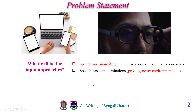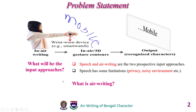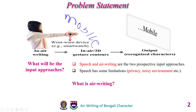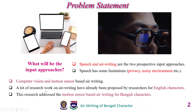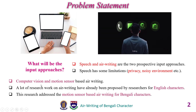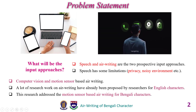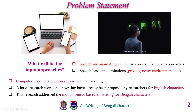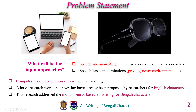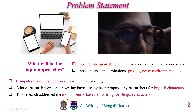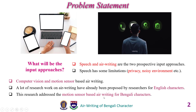Now, what is air writing? In air writing, the hand movement in three-dimensional space will be converted into linguistic characters, and by this way the user can give text input or any other instructions to the digital world. There are two methods of air writing: computer vision-based and motion sensor-based. A lot of research works on air writing have already been proposed by researchers for English characters. This research addresses the motion sensor-based air writing for Bengali characters.